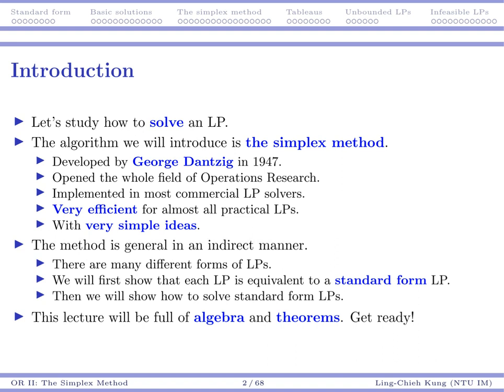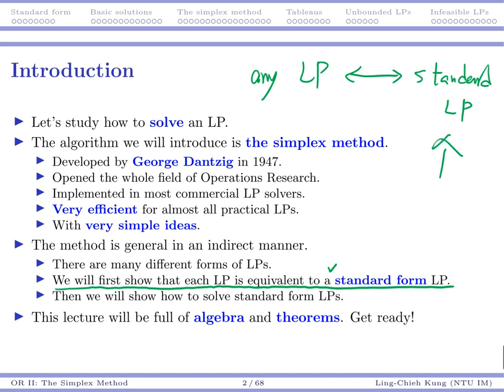The first thing to do is that we will first show that all linear programs are equivalent to one thing called the standard form program. So, given any linear program, we're going to convert it to what we call a standard form linear program. And then we will use our simplex method to solve it. Once we are able to develop a method to solve the standard form programs, we are able to solve any linear program. That's the idea, and later we will show how that works.